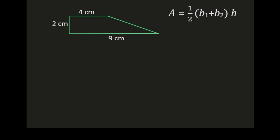We're going to solve for the area of this trapezoid using our formula: area equals one-half times the sum of our bases times the height. We need to label our bases and height so we can easily plug them into the equation. I'm going to use four centimeters as base one and nine centimeters as base two — but remember it doesn't matter which one you label base one or base two. The height is the perpendicular line between the bases; in this example it's the side that is two centimeters long. So our height will be two centimeters.